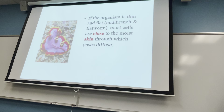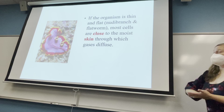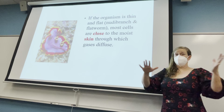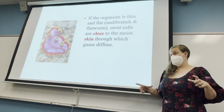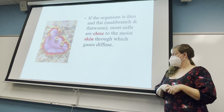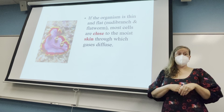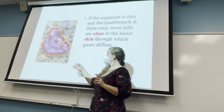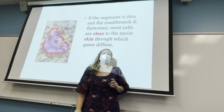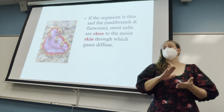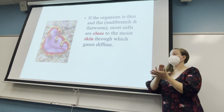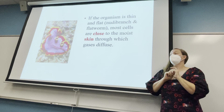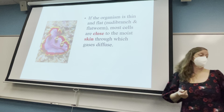The flatworm is very flat — wide and long — and that shape provides adequate surface area for oxygen to diffuse right through the skin. One reason they've evolved to be flat is that every cell has to be very close to the surface where oxygen is coming in. Being flat means every cell can get oxygen and release carbon dioxide efficiently.